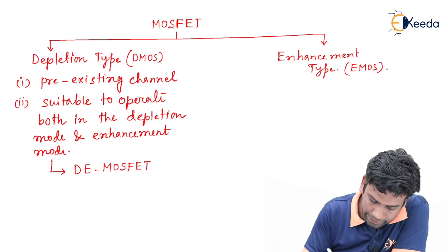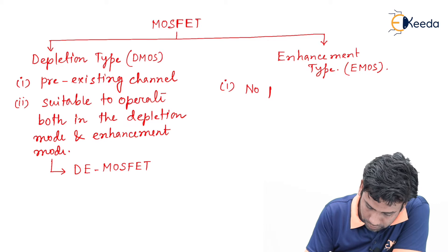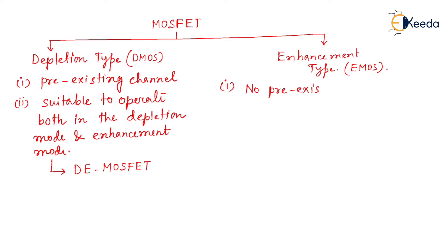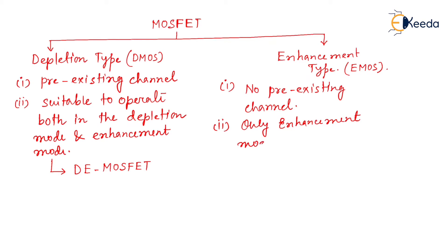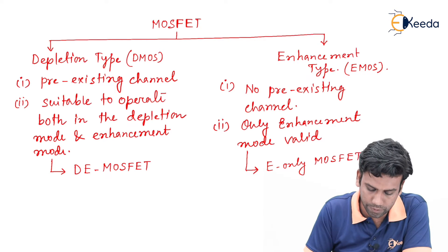Similarly, in the enhancement type MOSFET, the first property is that there is no pre-existing channel inside this MOSFET. The second property is that only enhancement mode is valid for enhancement type MOSFET. That is why the enhancement MOSFET or E-MOSFET is called as E-only MOSFET.